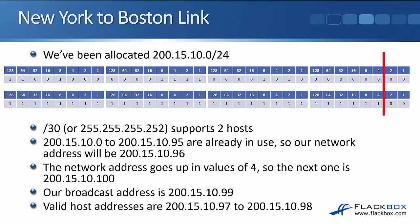We're already using up to 200.15.10.95 for our departments, so our network address will be one up from there — 200.15.10.96. Looking at the line, the network address increments in steps of four, so the next network address would be 200.15.10.100. One less than that gives us our broadcast of 200.15.10.99, which leaves the host addresses as .97 and .98.